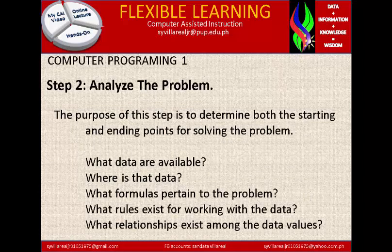Step 2: Analyze the problem. The purpose of this step is to determine both the starting and ending points to solving the problem. You answer a series of questions to analyze the problem: First, what data are available? Second, where is that data? Third, what formulas pertain to the problem? Fourth, what rules exist for working with the data? And last, what relationships exist among the data values? When we ask what data are available, you need to identify the theories, then study those theories of the algorithm, and investigate or analyze something more concise and nearer to your problem.